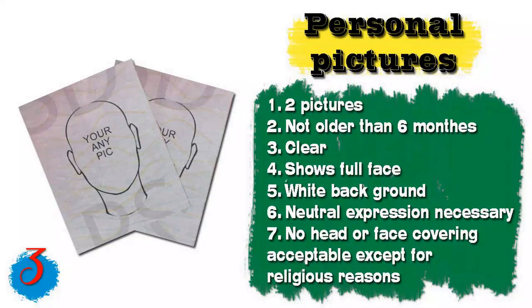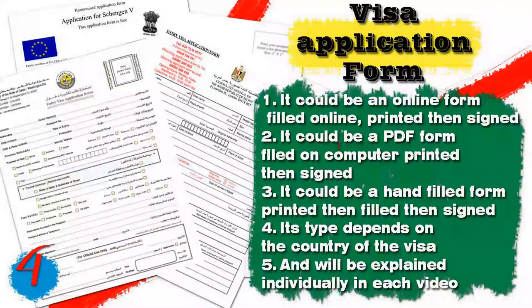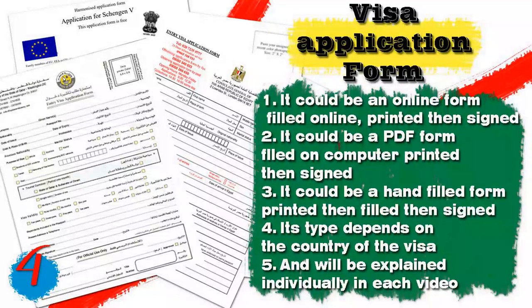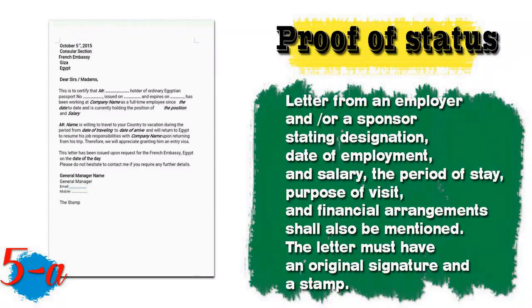Number two: you will need a photocopy of your passport — recommended to be colored, showing both the data page and the photo page. Number three: personal pictures — two photos not older than six months, clearly showing the full face with a white background and neutral expression; no head or face covering accepted except for religious reasons. Number four: the visa application form — it can be filled online and printed, filled as a PDF and printed, or hand-filled; its type depends on the country.